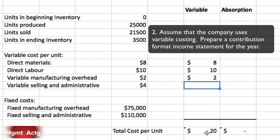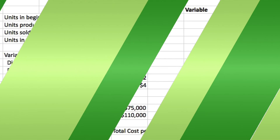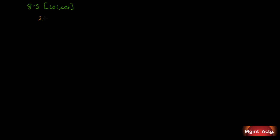Number two: assume the company uses variable costing — prepare a contribution format income statement for the year. We begin with sales: each unit was $35 and we sold 21,500 of them, giving us total sales of $752,500.